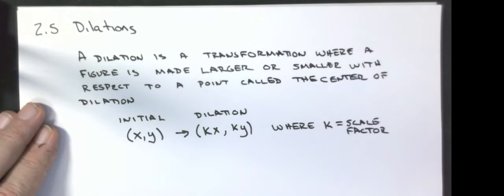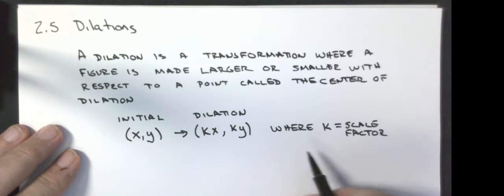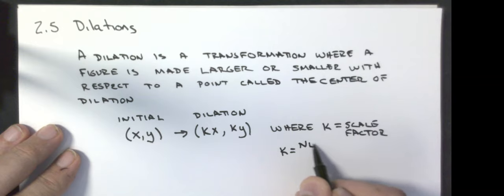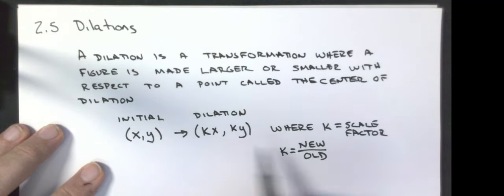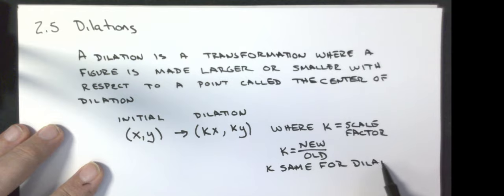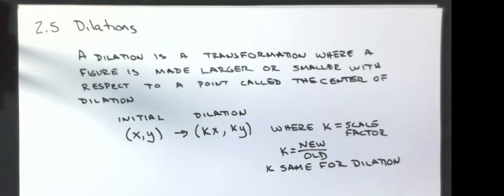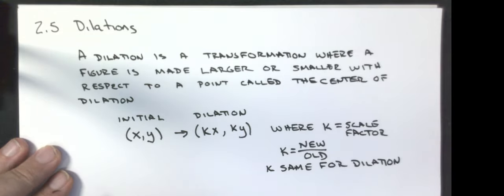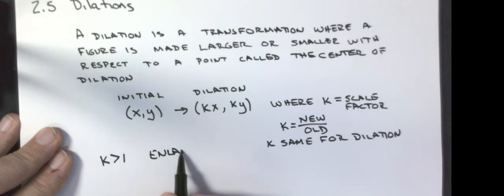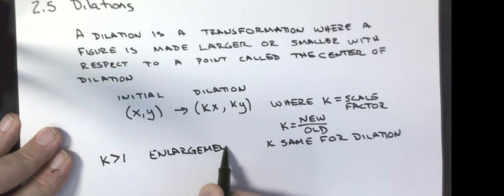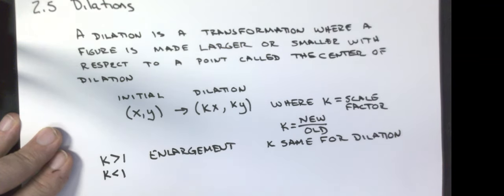You used scale factors last year. The scale factor is new divided by old. Both k values have to be the same for a dilation — it blows up in the x and y direction by the same amount. When k is bigger than one we call it an enlargement, and when k is smaller than one we call it a reduction.